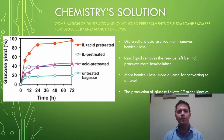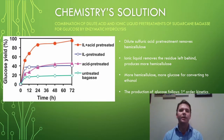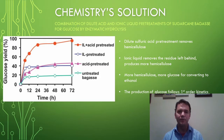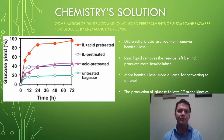A solution to this problem involves a combination of two different methods. First, the hemicellulose can be extracted from bagasse using dilute sulfuric acid, but it leaves behind a residue. This residue can be removed with ionic liquid. The more hemicellulose you have, the more glucose you have for converting to ethanol. In total, this reaction follows first order kinetics.